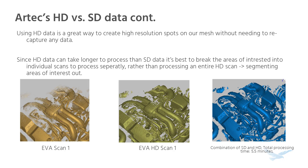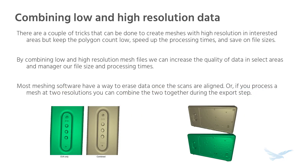A big benefit of HD data is how we can use it to add high definition data in areas of interest without needing to re-scan anything. HD data takes longer to process due to its higher point density. We can process the scan in two parts: the standard data in the bulk of the project, and HD in the areas we want well defined. This can be done by simply erasing the data around the area of interest so only the spot we want in high quality remains, and the inverse for the standard definition data. We can cut back on total processing times since only a small section is being processed in higher definition versus the entire thing. When we export these two meshes, they can be merged together — combining the low and high resolution meshes to improve quality in select areas while maintaining manageable file size and processing times.